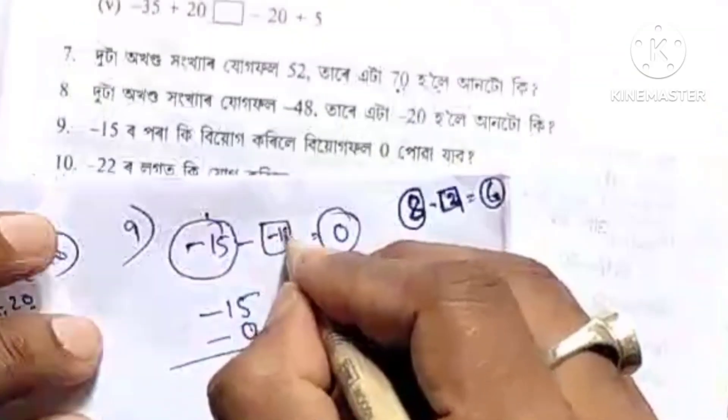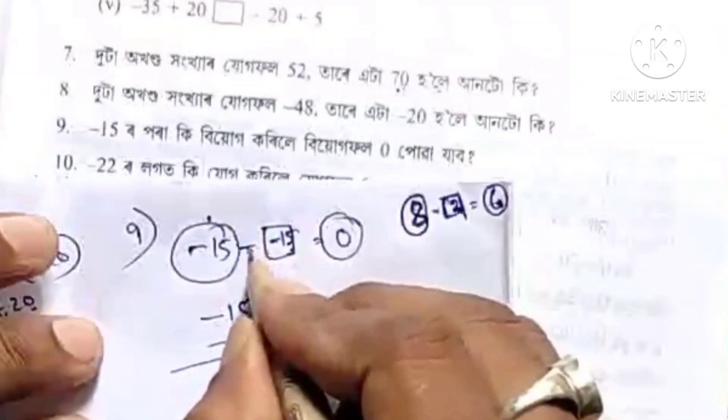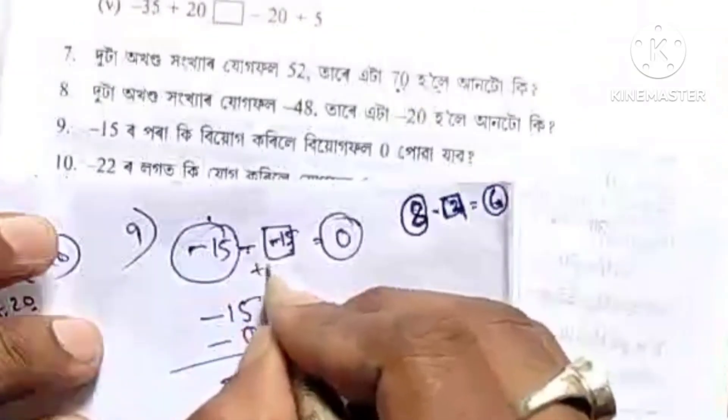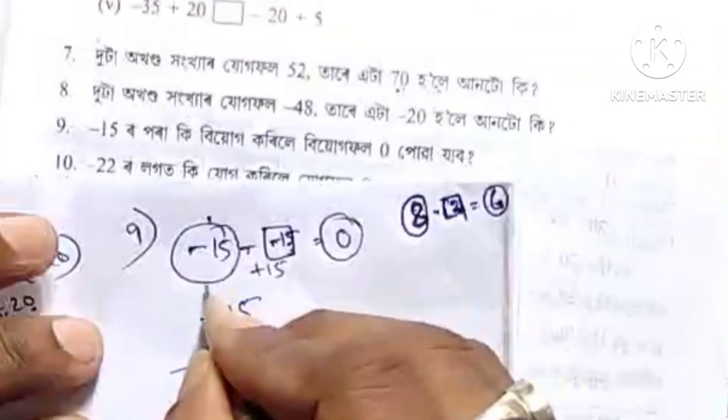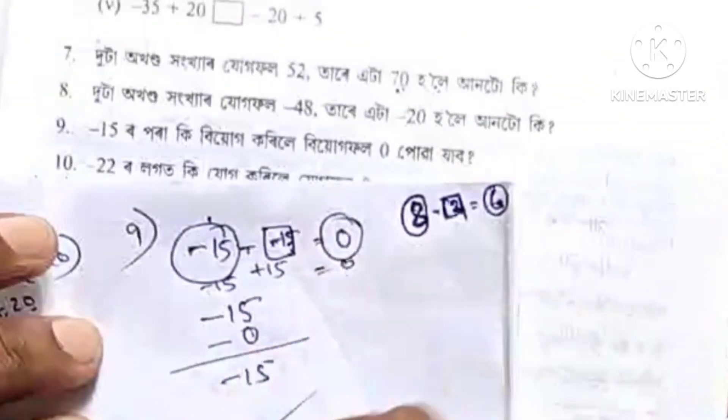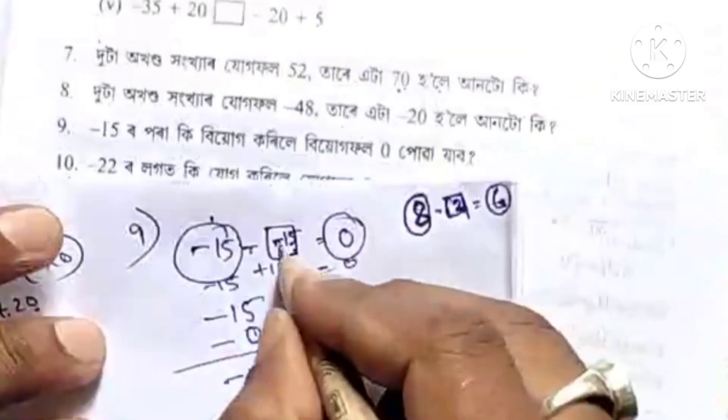So minus 15 — minus minus two together give plus 15. Result: minus 15. Minus 15. So this gives 0 — meaning minus 15 equals zero.